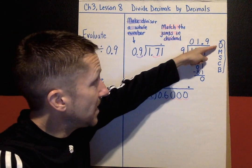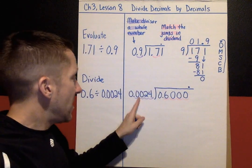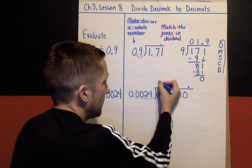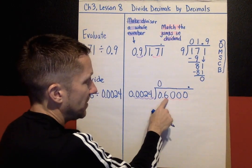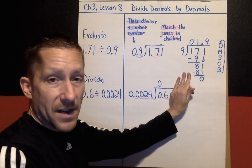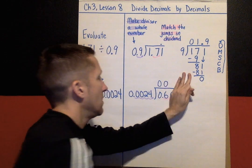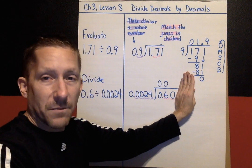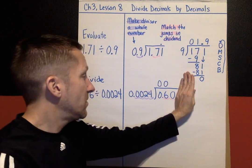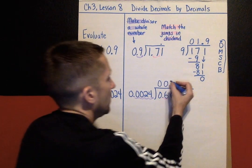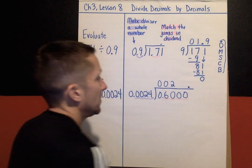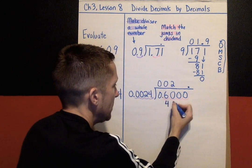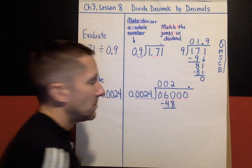So again, I'm following my steps: divide, multiply, subtract, check, bring down. How many times does 24 fit into 0? It doesn't. So I could put a 0 here if I want to. How many 24s fit into 6? Still none. How many 24s fit into 60? Well, now I can fit some 24s. 1 twenty-four is 24, 2 twenty-fours is 48. The next one is too much, goes over 60. So my answer is 2 times. Multiply: 2 times 24 is 48.